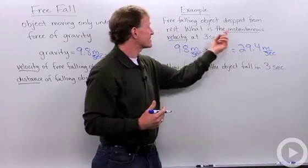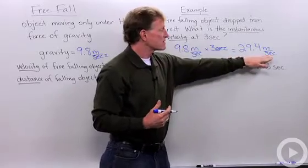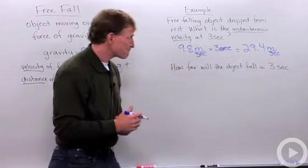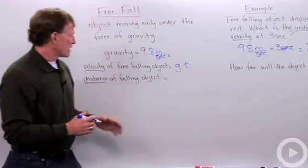Remember to always carry those units and simplify so that you know that you have the proper units. In this case, they're asking for an instantaneous velocity and that 29.4 meters per second is your instantaneous velocity. Let's look at the second problem.